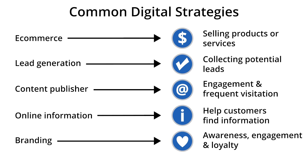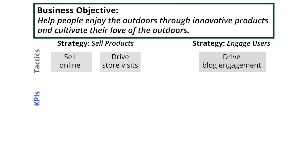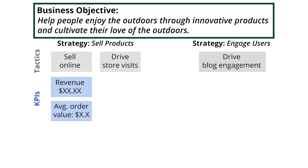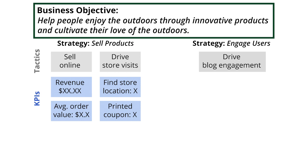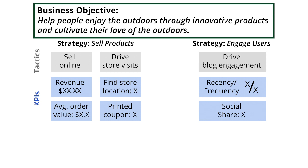The next step is to choose the key performance indicators, also referred to as KPIs. These are the measurements of your strategies and tactics, and are the numbers that you'll look at day-to-day to understand how your business is performing. In our example business, for selling products, we're going to look at KPIs like how much revenue we're generating and the average order value for each transaction. For the tactic of driving brick-and-mortar store visits, we can look at how many times the store locator on our site is used, or how many times users print a coupon for in-store use. To measure user engagement on our blog, we might look at recency and frequency metrics, and whether or not users share our brand content on social networks.